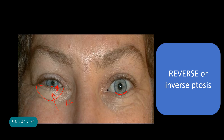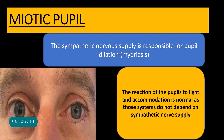Normally the lower eyelid is positioned just at the limbus; however in Horner's syndrome the lower eyelid sits higher — this is called inverse ptosis or reverse ptosis. The second sign is a miotic pupil. Because the sympathetic supply to the dilator pupillae is affected, the pupil is smaller compared to the normal side. However, this pupil still reacts normally to light and accommodation, as those reflexes are unrelated to sympathetic nerve supply.